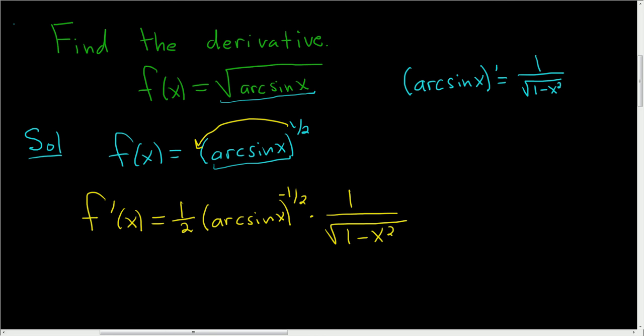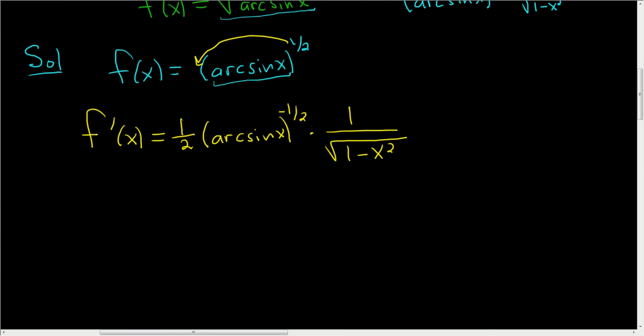I suppose we could clean this up a little bit, so let's do that. So f prime of x is equal to 1 divided by 2 square root arc sine x, right? We brought this downstairs. It became a positive 1 half, and we wrote it as a square root. And then we still have this square root over here, so square root 1 minus x squared.